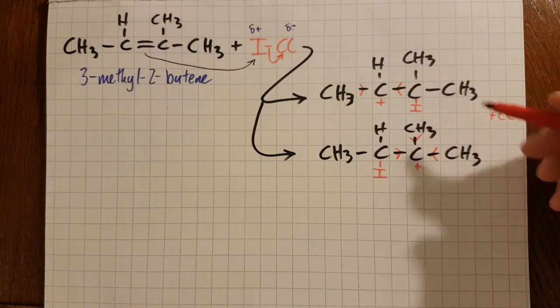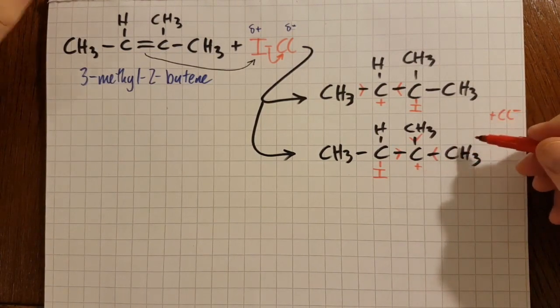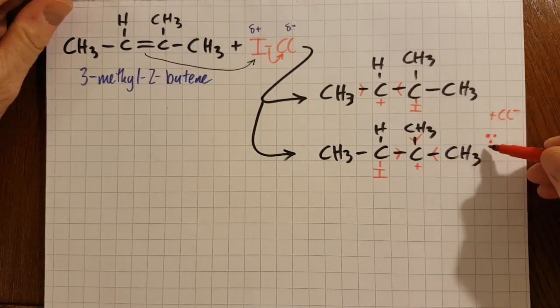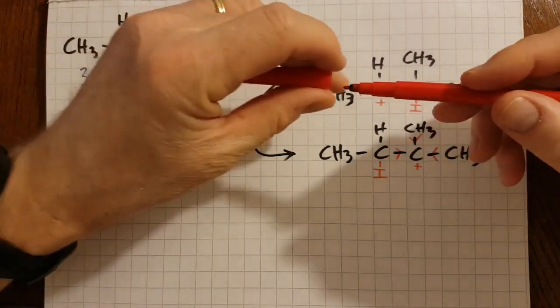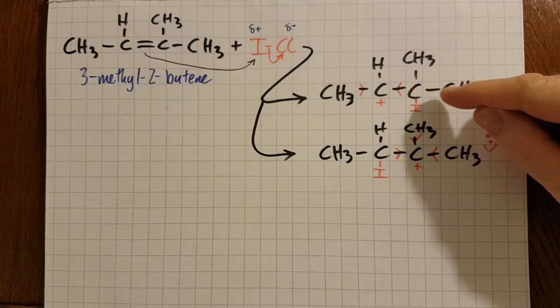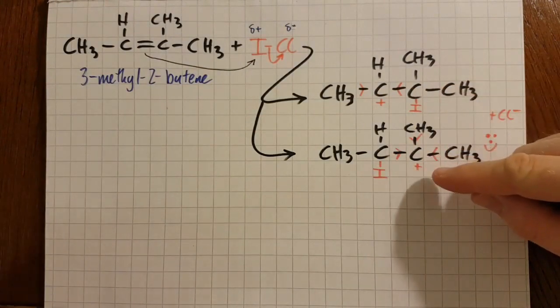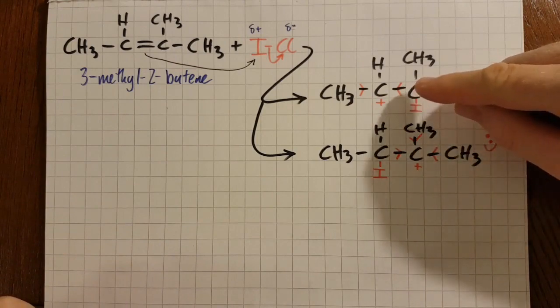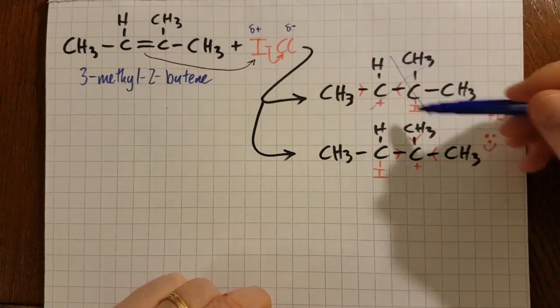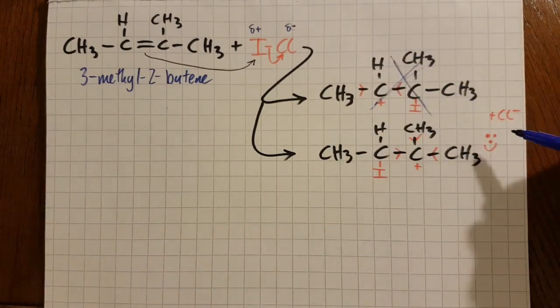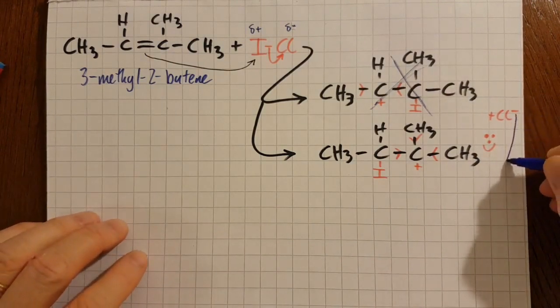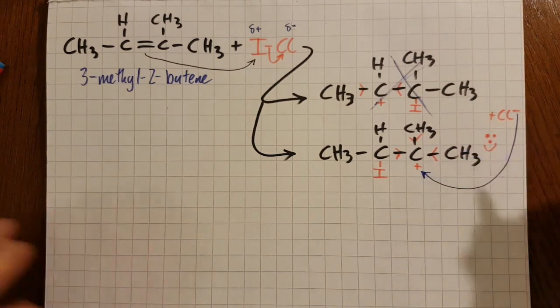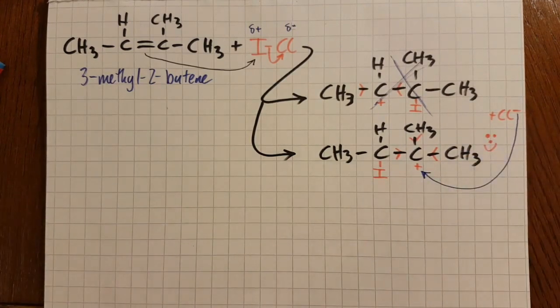So that means that this molecule is the one that's going to be preferentially created as opposed to that one. This one's pretty stable too, but this one is the most stable—three positive inductive charge effects as compared to two. So let's strike that out. Then you're going to have the electron moving over to there to make the final product.